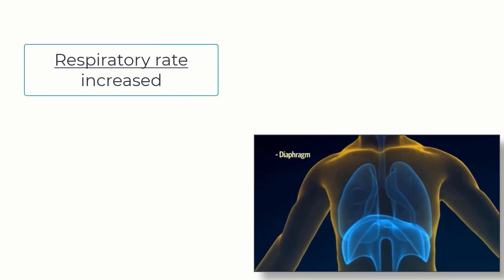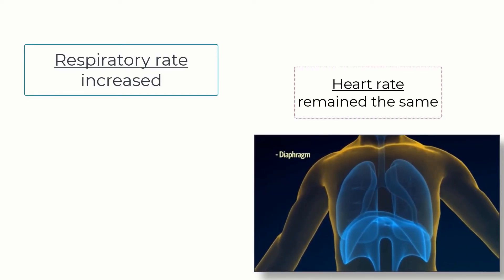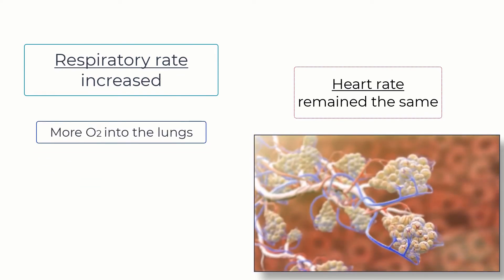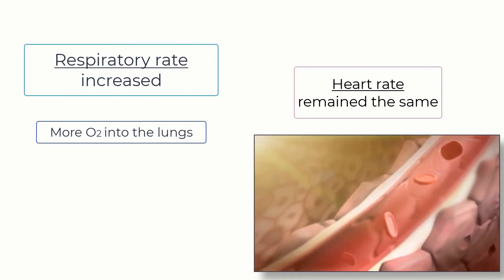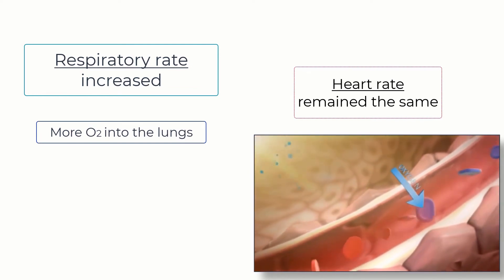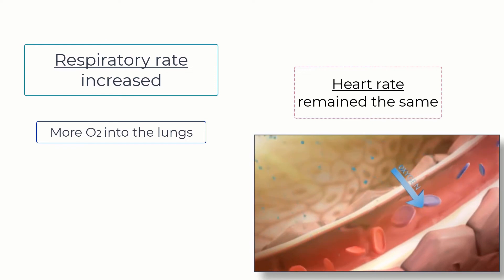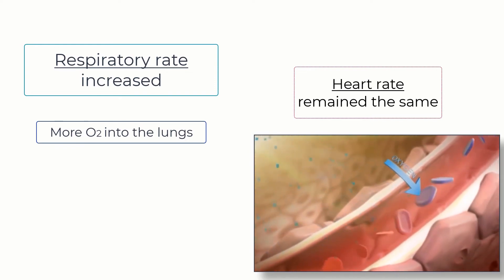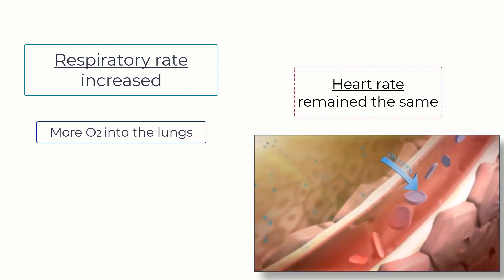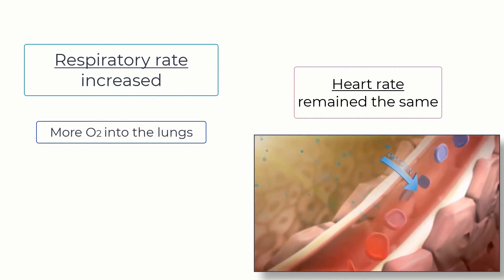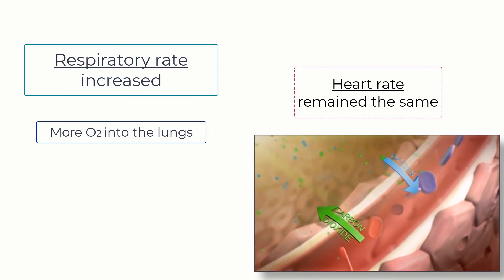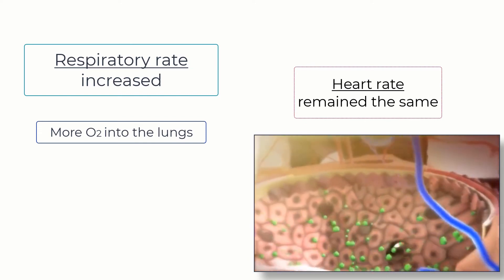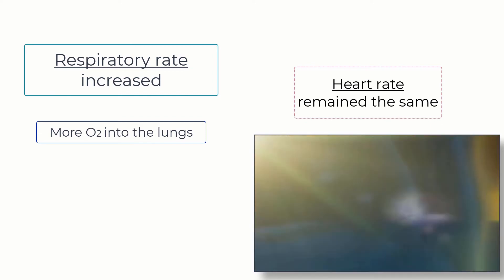Imagine if only respiratory rate increased, yet heart rate remained the same. The increased ventilation would bring more oxygen into the lungs and inflate more collapsed alveoli. However, there would be no blood for this oxygen to diffuse into. Therefore, while there was an increase in oxygen uptake by the lungs, it would be completely ineffective without a corresponding increase in blood flow to receive the oxygen from the lungs. Similarly, if blood flow to the lungs increased to remove carbon dioxide from the blood without an increase to ventilation, the blood would simply circulate through the lungs with no increase in available alveoli to release the carbon dioxide into.